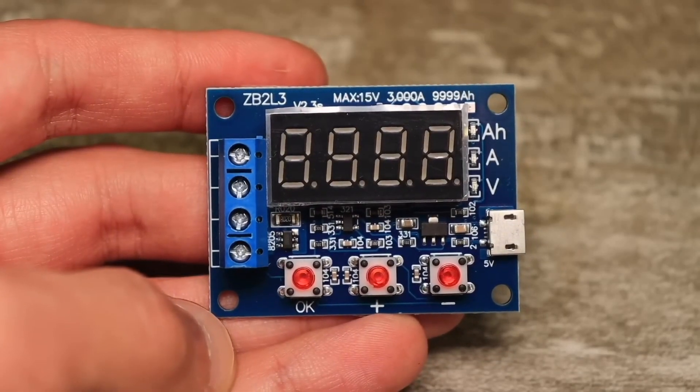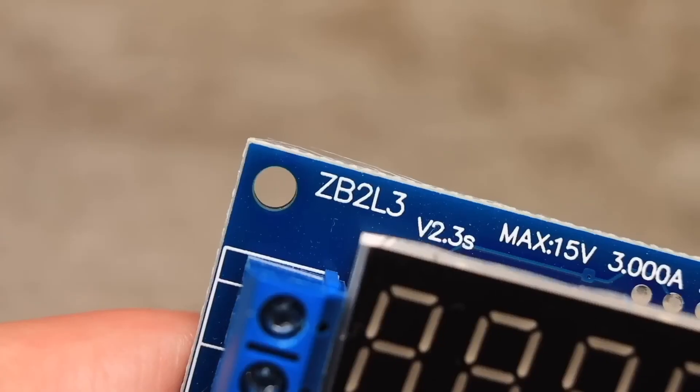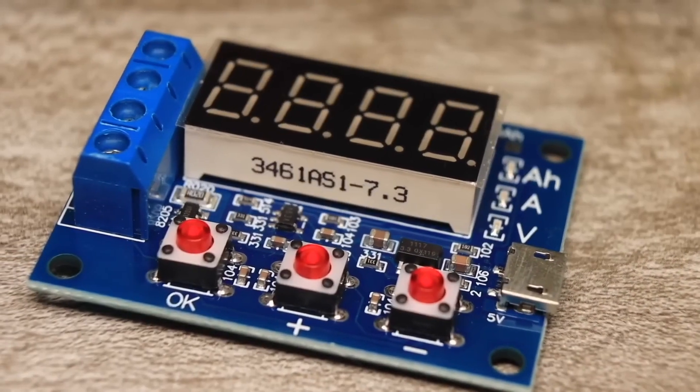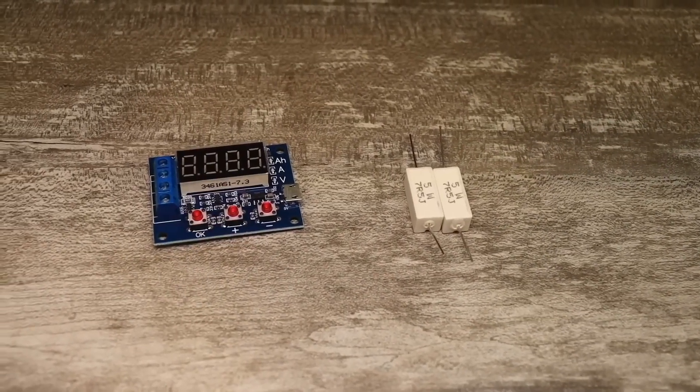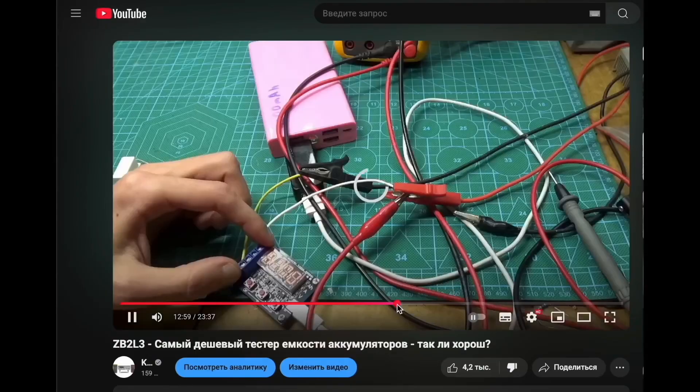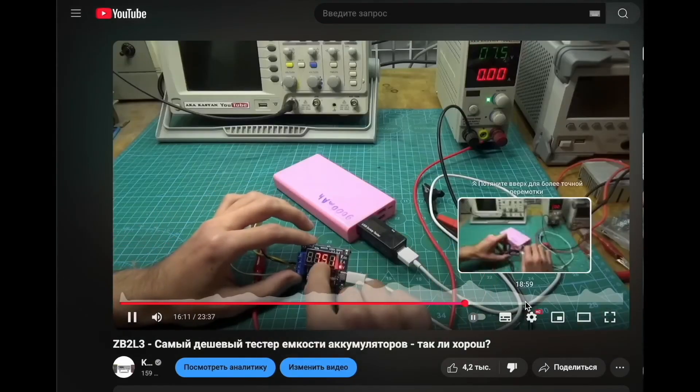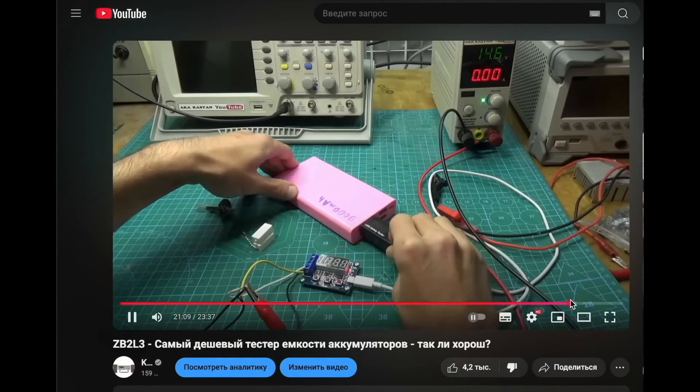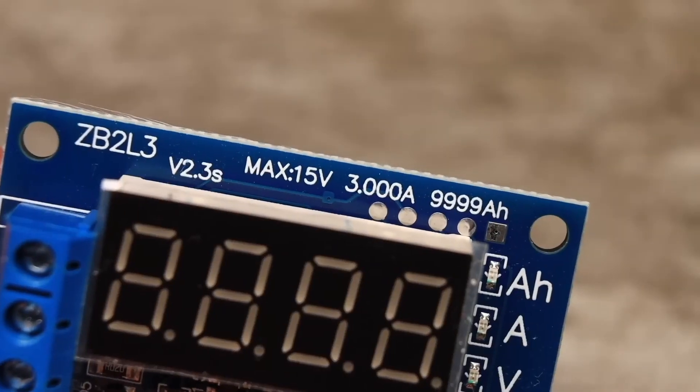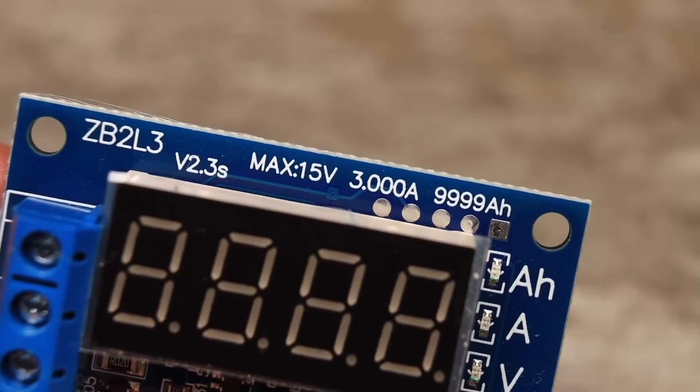The next simple tester will help you determine a battery's capacity. More accurately, it should be called a capacity counter. It's called the ZB2L3 and is the cheapest meter of its kind. It comes with a pair of five watt 7.5 ohm resistors. A few years ago, I did a detailed review of this board on my second channel. If you're interested, you'll find the link in the description. It's designed to determine a battery's capacity by discharging it. The battery voltage can range from 1 to 15 volts.